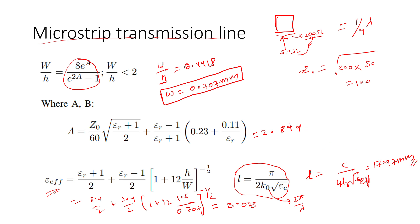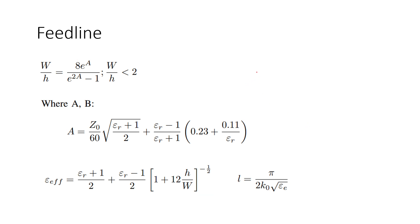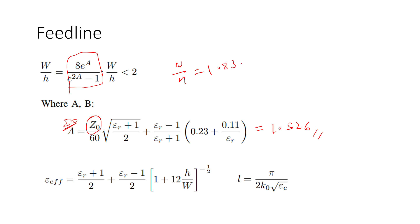For the feed line, the same procedure is followed, but Z₀ is kept at 50 ohms instead of 100 ohms. This gives A = 1.526. Substituting A = 1.526 into the W/h formula gives W/h ≈ 1.83. Since h = 1.6 mm, the width W = 2.94 mm. The ε_effective for the feed line is then calculated to be 3.31.